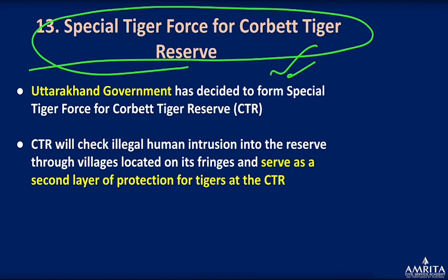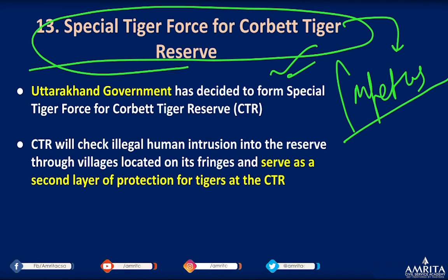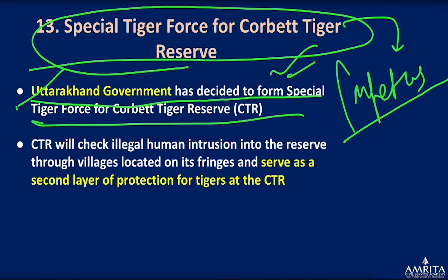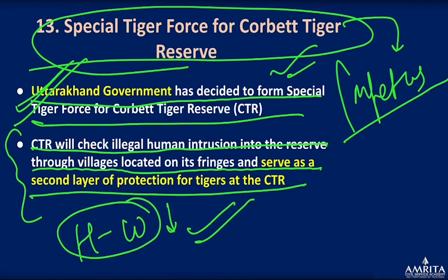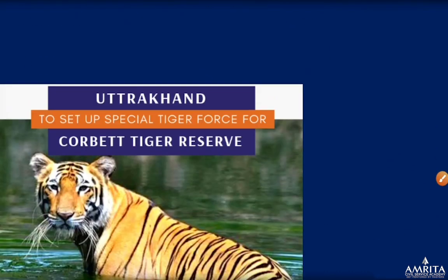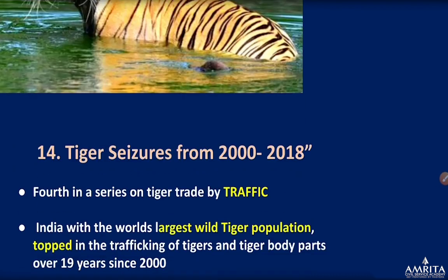Next is a special tiger task force for Corbett National Reserve. I recommend going to the impetus series to see the Corbett National Park location. The Uttarakhand government has decided to form a special task force for the Corbett Tiger Reserve, which will check illegal human intrusion into the reserve through villages located on its fringes, serving as a second layer of protection for tigers. This will ease the problem of human-wildlife conflict.